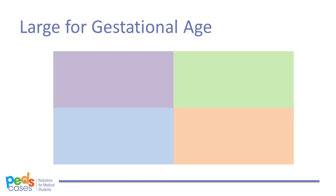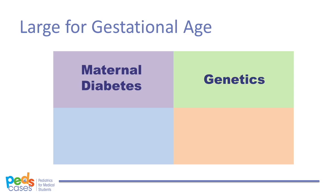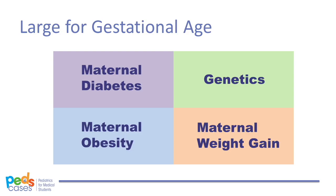There are a number of reasons that a baby can be large for gestational age. One of the main risk factors is being born to a mother with diabetes, caused by excessive maternal glucose crossing the placenta. However, it is important to realize that not all LGA babies are born to diabetic mothers, and not all diabetic mothers will deliver LGA babies. Some families simply have a genetic tendency towards having big babies. There are a number of genetic syndromes that can lead to LGA, the most common of which is probably Beckwith-Wiedemann syndrome. Maternal obesity or excessive maternal weight gain can also lead to LGA infants.